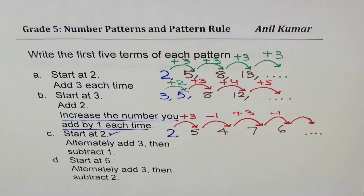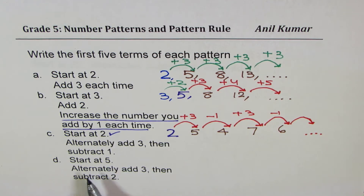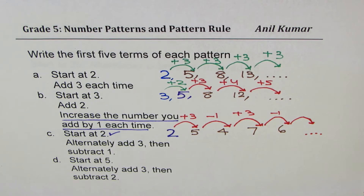So we have three very different patterns, and they give you an idea of what you are going to do in grade five regarding number patterns. Take part D as your test question: you need to start at five, alternately add three, then subtract two. Pause the video, solve it, and then look at my solution.